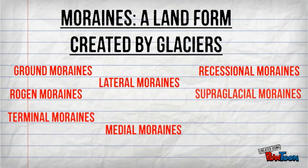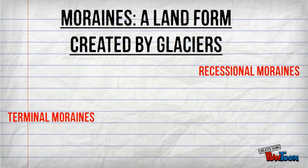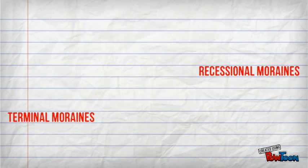Moraines are left by glaciers. There are many different types of moraines, but for right now we're going to focus on two different types: the terminal moraine, or end moraine, and the recessional moraine.